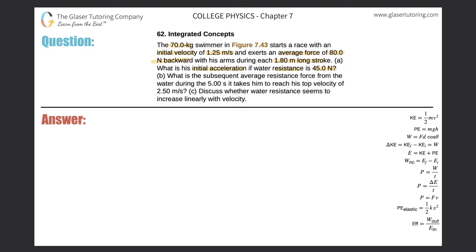Alright, so let's just draw a free body diagram over here. Now it says that, let's just assume he's moving in the right-handed direction. So the velocity is pointing to the right. They told us that the velocity initially here is going to be 1.25 meters per second.